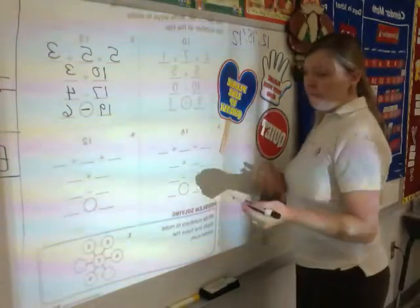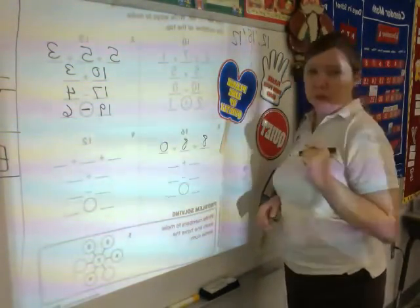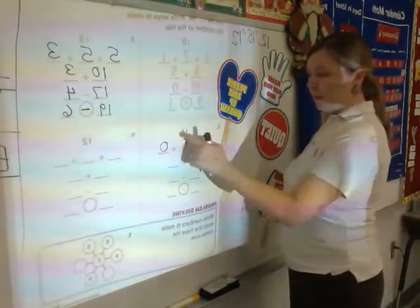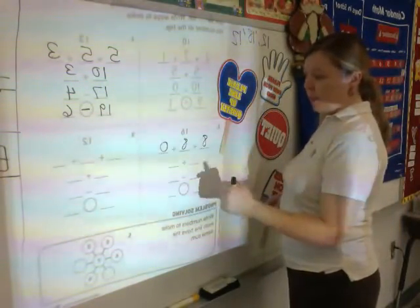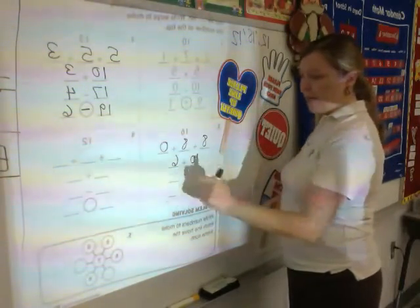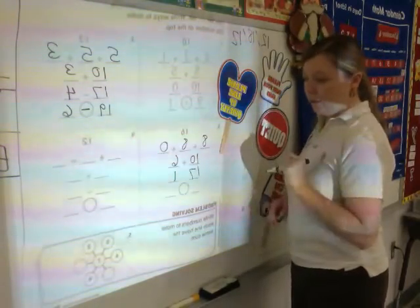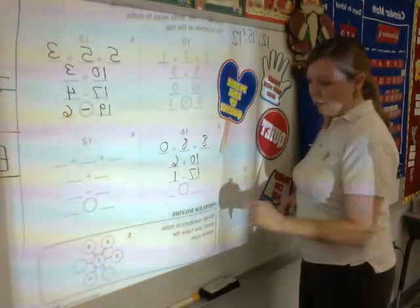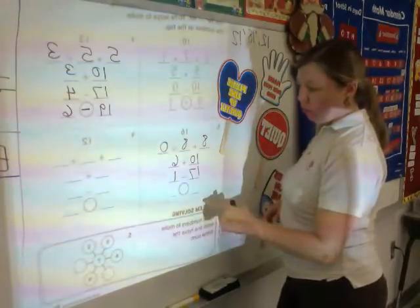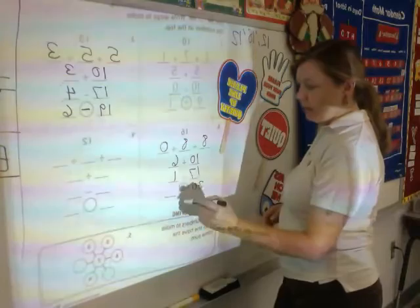For sixteen, well let's see. I could use eight plus eight plus zero. Those are three addends that equal sixteen. I could use down here ten plus six. Then a subtraction problem. I could do seventeen minus one. And then down here I'd like to do another subtraction problem. This time I'll do twenty minus four.